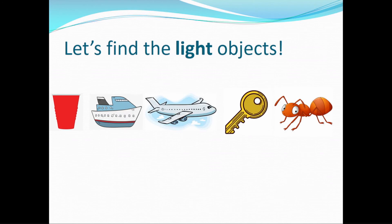Now let's find the light objects. A cup — is a cup heavy or light? A cup is light. A massive ship — that's very heavy. An aeroplane — can you lift an aeroplane? Nope! An aeroplane is heavy, it's not light.